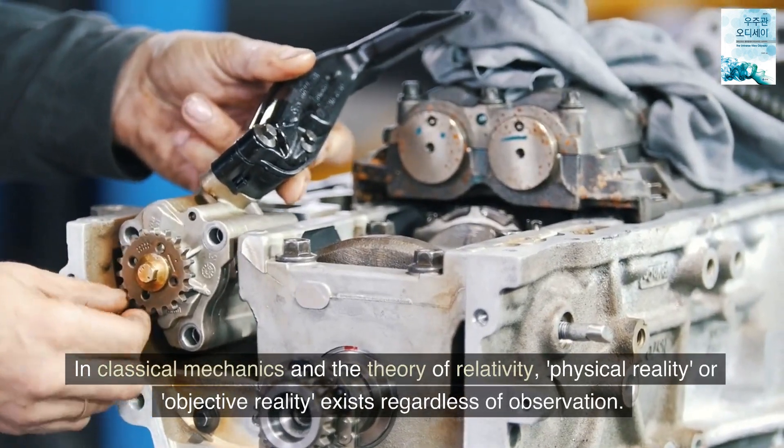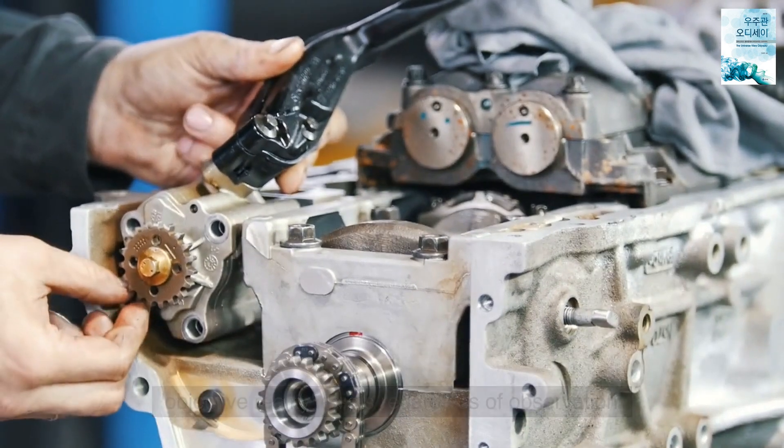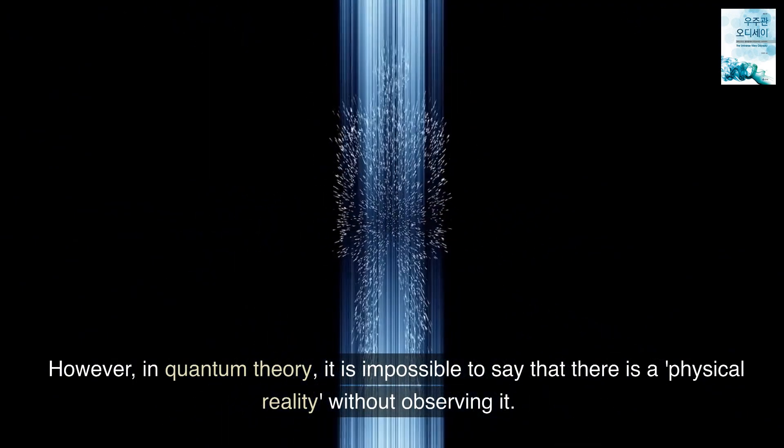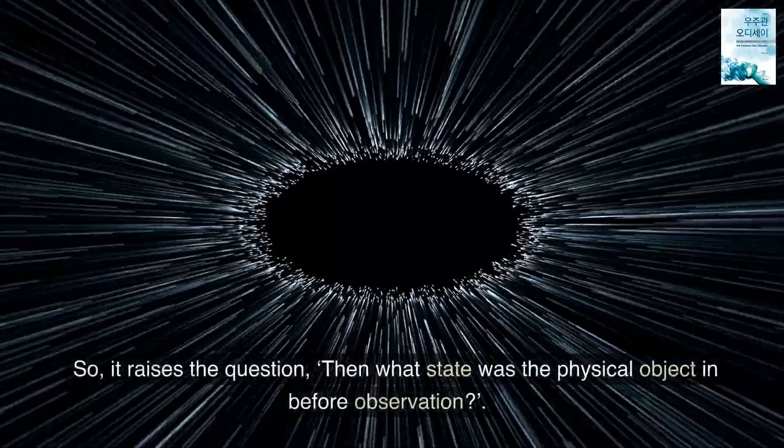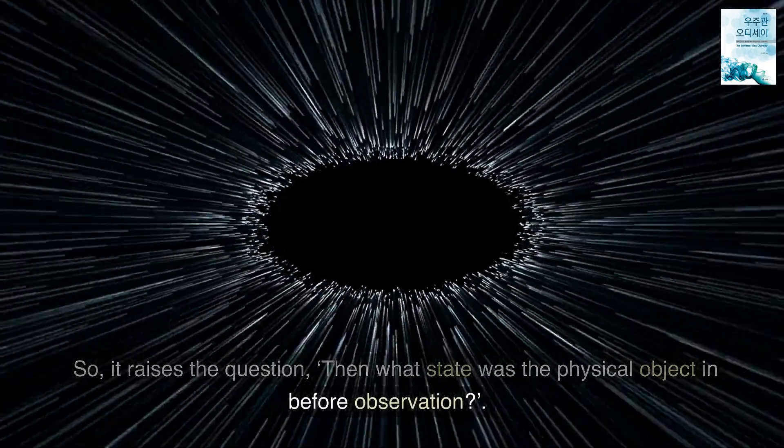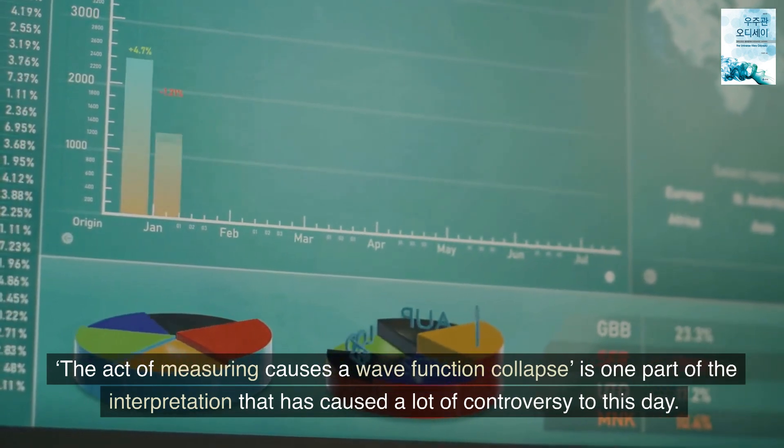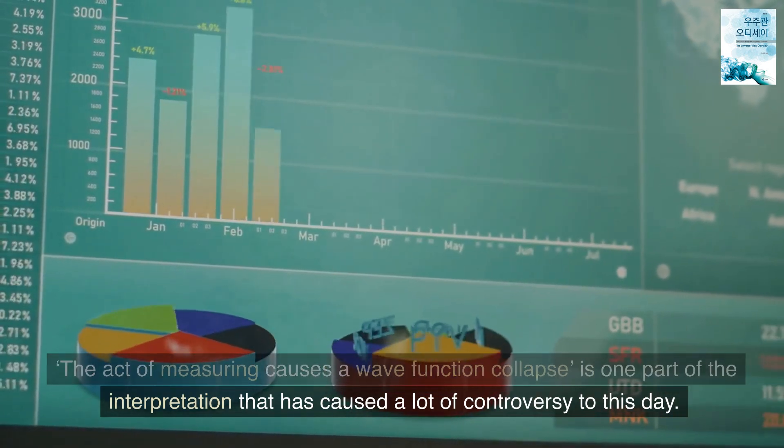Bohr emphasized that in the exploration of the quantum world, the object, the observer, and the observation device all form one system. The passage 'All physical quantities have meaning only as observable quantities' is the core of quantum theory and conflicts with the concept of physical reality in classical mechanics and relativity theory. In classical mechanics and the theory of relativity, physical reality, or objective reality, exists regardless of observation. However, in quantum theory, it is impossible to say that there is a physical reality without observing it. So, it raises the question, then what state was the physical object in before observation?